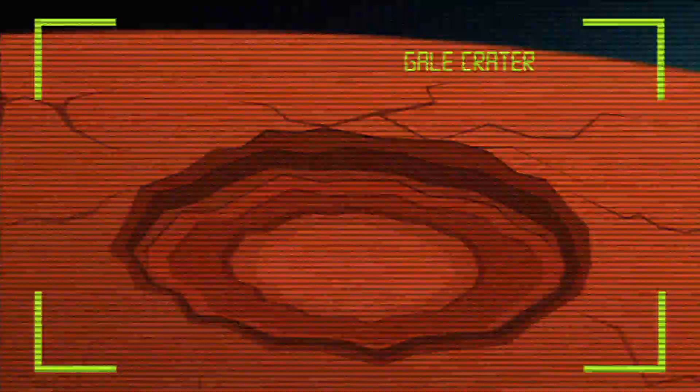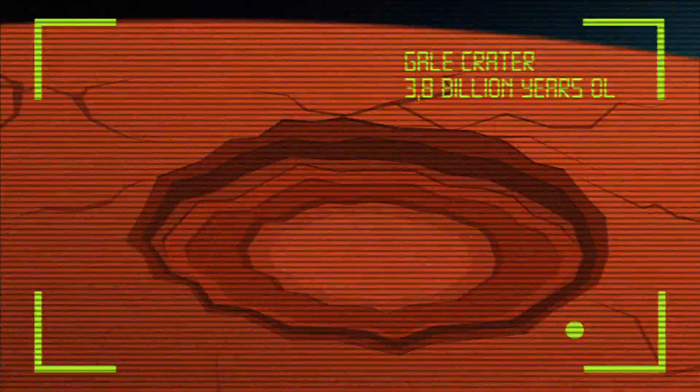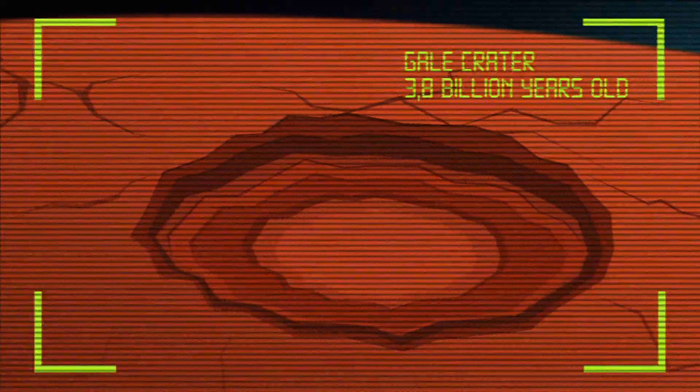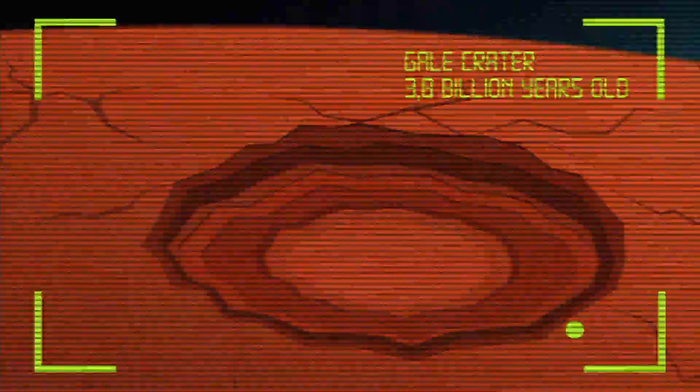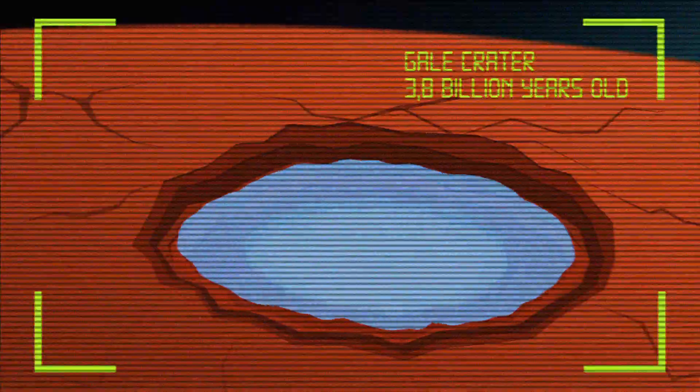One of these is Gale Crater, an impact crater created when a meteor hit the surface of Mars nearly 3.8 billion years ago. Evidence from orbit suggests past traces of water, which means the crater might once have supported life.